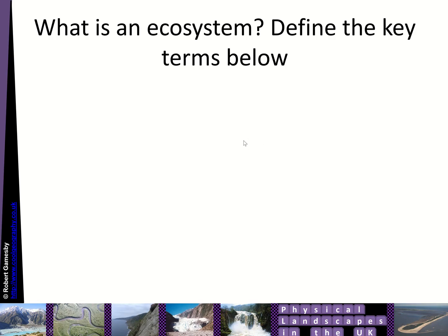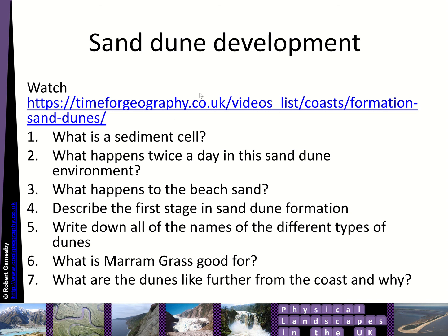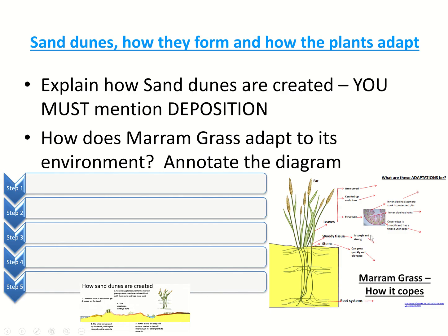In terms of tasks: you can define the key terms, and consider what conditions on a sand dune make it difficult to survive. Watch the video from Time to Geography — if you haven't subscribed to their site, it's absolutely fantastic. There are six questions based on their video, and then tasks around the information I've just given you: Why do we get pioneer plants at the front? What conditions do they have to cope with? What are the dune slacks? Explain how dunes are created using the flowchart, and how does marram grass cope?